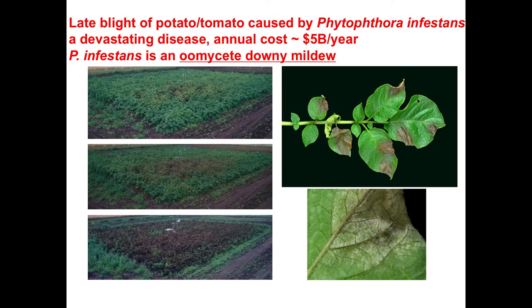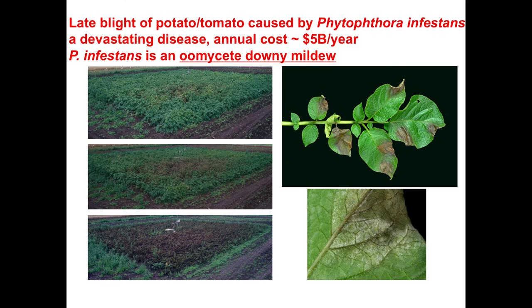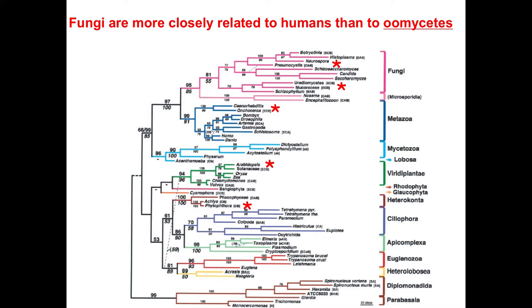One of the more important diseases is late blight, caused by Phytophthora infestans, which affects potato and tomato. From a small colonisation within a field, within a couple of weeks the field can be completely wiped out. An important thing to know about this organism: it's not a fungus. Looking at the tree of life, Phytophthora is more closely related to brown algae and malaria parasites than to fungi. In fact, humans are more closely related to fungi than Phytophthora is.